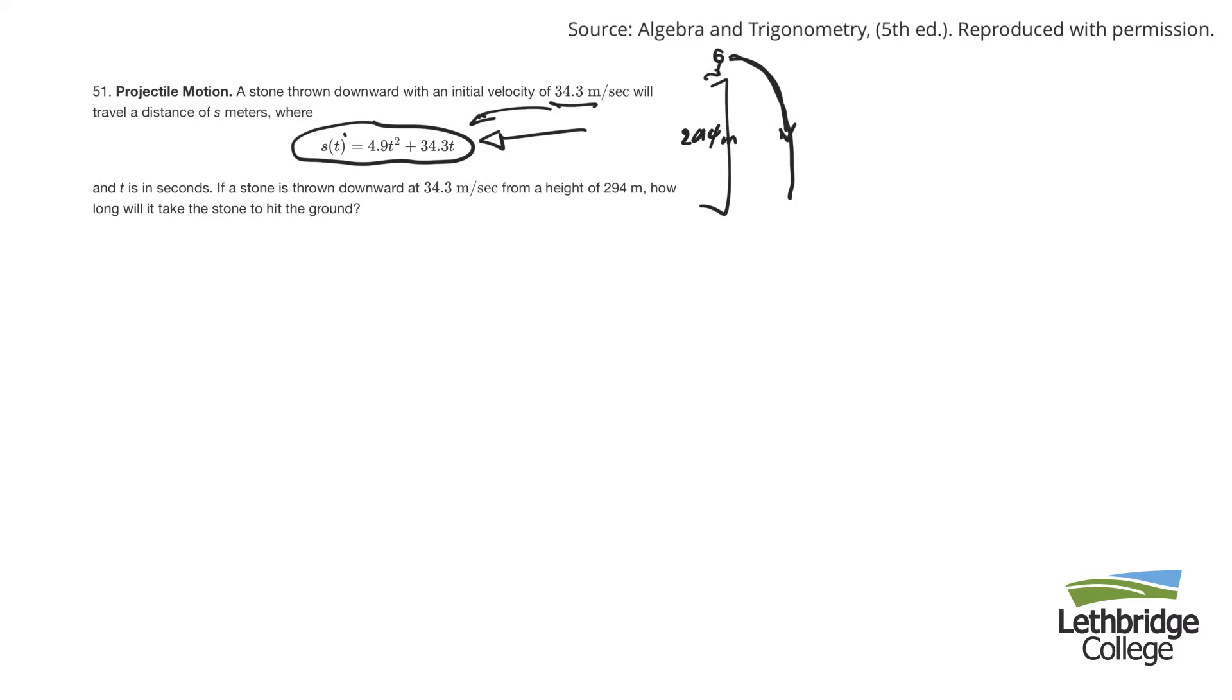So S of T, that there is the distance. T stands for time. They say that in there, T stands for time. And S of T would be the distance after a certain length of time. So I'm wanting to know how long it takes for the thing to hit the ground if I'm throwing it from 294 feet. So this has to be my distance. I'm plugging that in there.